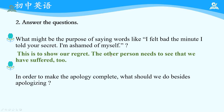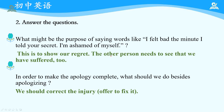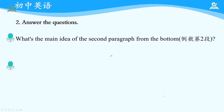下一个问题：In order to make the apology complete, what should we do besides apologizing? 对应的是：we should correct the injury, offer to fix it, offer the make-up actions。举出弥补的措施。下一个：What is the main idea of the second paragraph from the bottom? 倒数第二段的subtitle已经传递了main idea：use the good timing. 在小事上要right now道歉；对更严重的问题，要more careful and thoughtful，因为等待的时间是sincerity的象征。